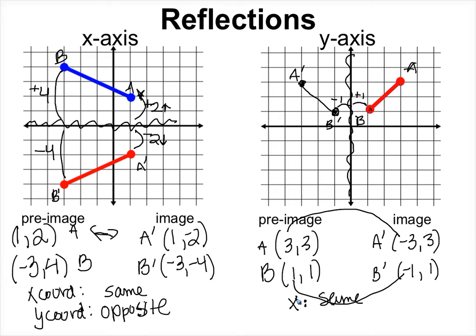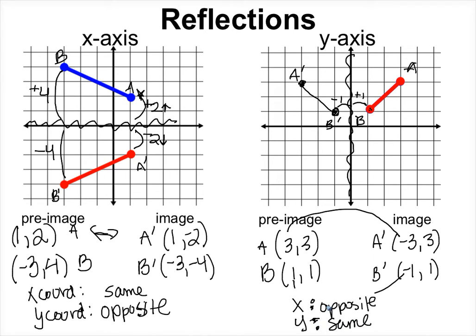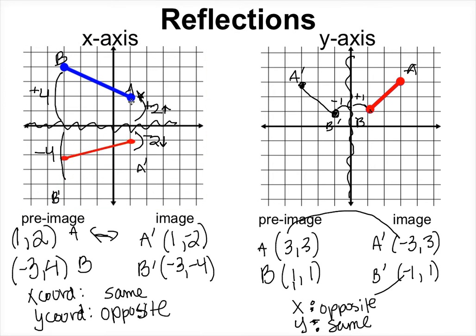When reflecting over the y-axis, the x becomes the opposite and the y stays the same. The reason: reflecting over the x-axis is a vertical movement — up and down — so the y-coordinate changes. Reflecting over the y-axis is a left-to-right movement, so the x-coordinate changes. Pause and copy that down.